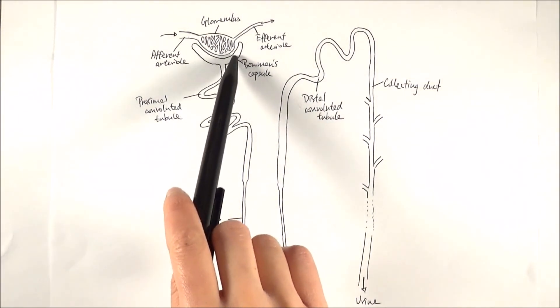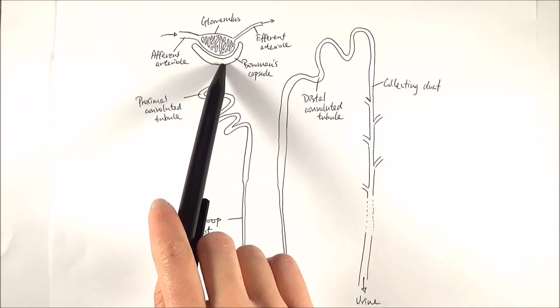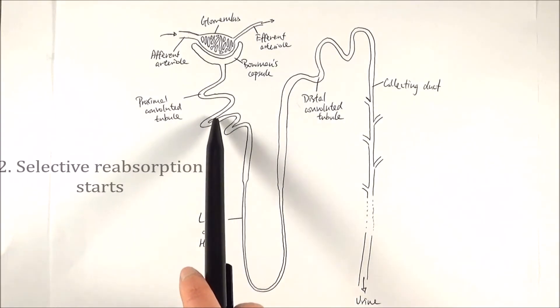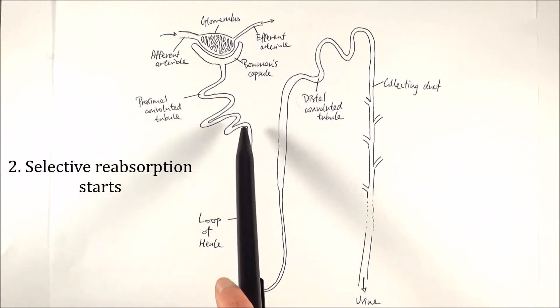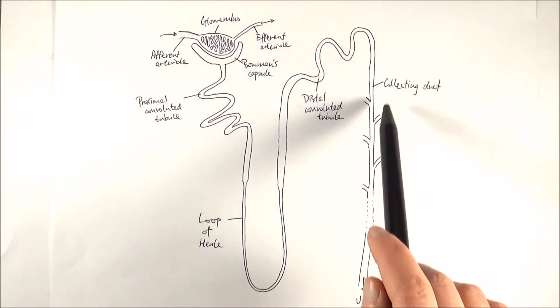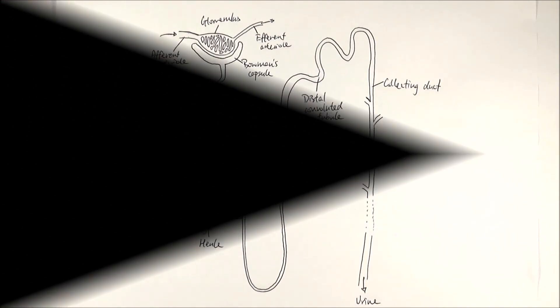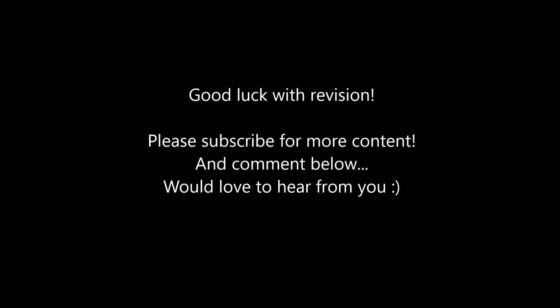Then the substances that go into the Bowman's capsule become what we call the filtrate, and it travels along to the proximal convoluted tubule where selective reabsorption starts occurring. Then it goes via the loop of Henle, distal convoluted tubule, and then collecting duct, finally producing urine at the very end.